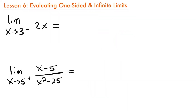When we first learned about limits, we looked at them graphically from the left side and the right side, and then from both sides. But so far, when we've been evaluating limits analytically, we've only been looking at them from both sides. Now that we've discussed continuity in the previous lesson, we can look at one-sided limits and how to evaluate them analytically.